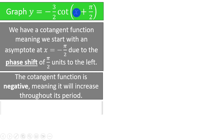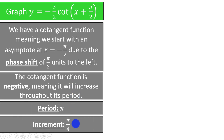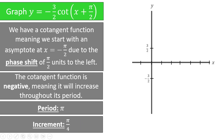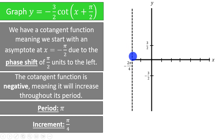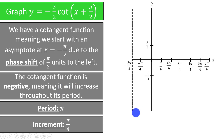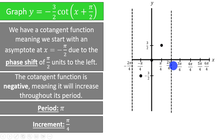Since we do not have a coefficient on x, the period will be pi, and the increment will be pi over 4. Our cotangent function starts at an asymptote at negative pi over 2, which I'll write as negative 2pi over 4 to match our increment. I can increment 8 times to the right for the remaining x points. Since we have a negative cotangent function, we are increasing throughout the period, coming up from negative infinity. At negative pi over 4, we will be at the point negative 3 halves. At 0, we will be at 0. At pi over 4, we will be at 3 halves. At 2pi over 4, we will have an asymptote.